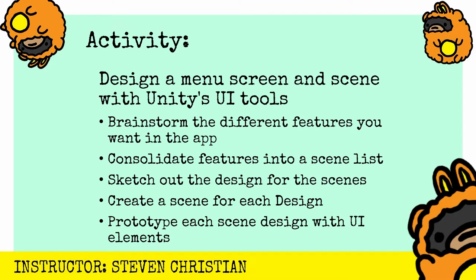Now it's time to apply what we learned with an activity. The goal is to design a menu screen and scene with Unity UI tools. The key steps are: brainstorming different features you want in the app, consolidating those features into a scene list, sketching out the design for the scenes, creating a scene for each design, and prototyping each scene design with UI elements — that's buttons, icons, canvases, images, whatever. Give it a try and post a reply in the comments. If you're not in a hurry, join me as I work on this activity in real time.